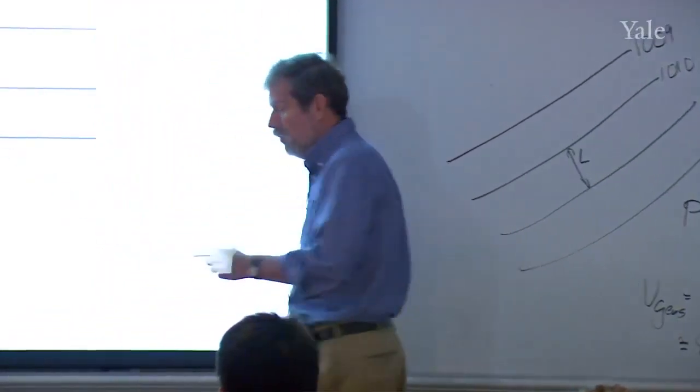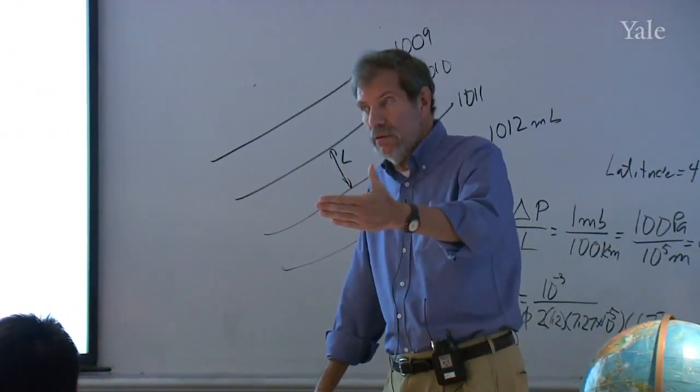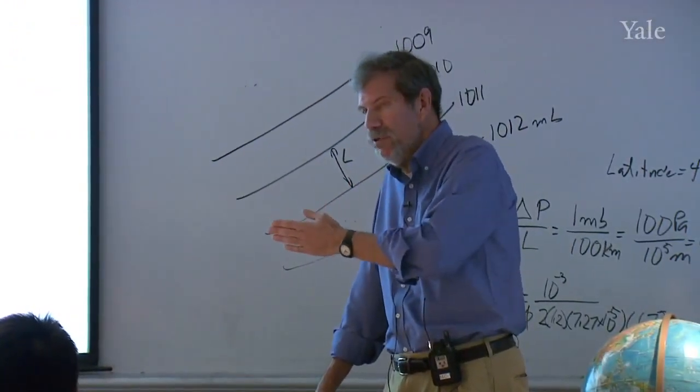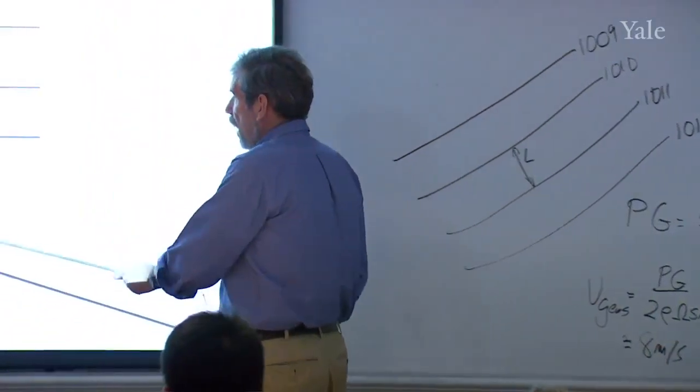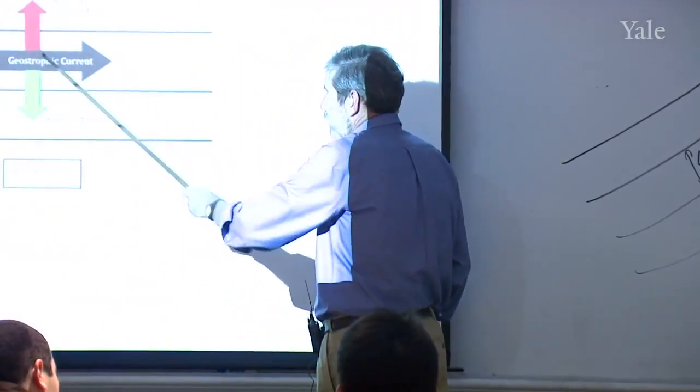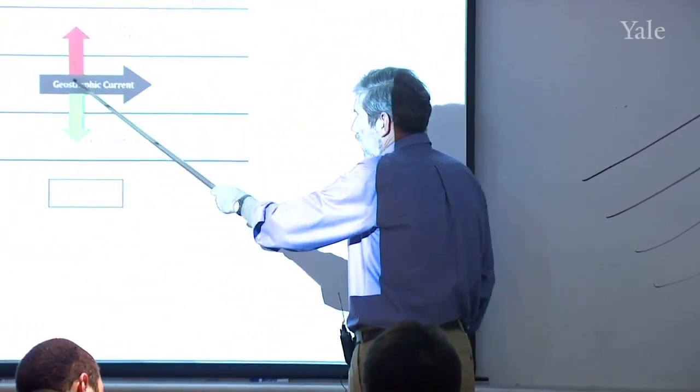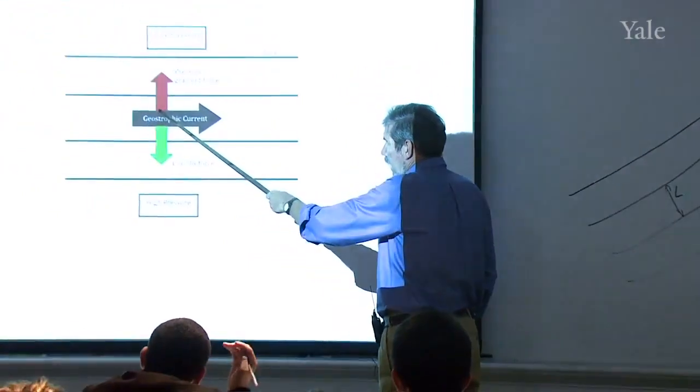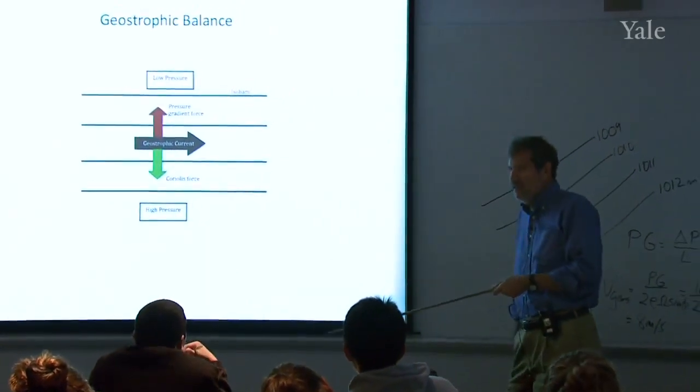We call it a pressure gradient force because it arises because there is a gradient. Gradient means a change in pressure with position. So high pressure here, low pressure there means that object is going to have a slightly higher pressure on the southward side, a little lower pressure on the northern side, and the net force is going to be to the north called the pressure gradient force.